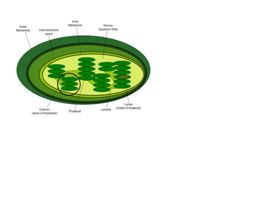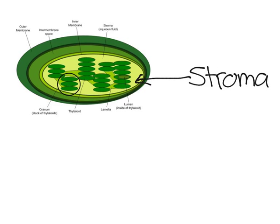What you see in this yellow part right here is the stroma. You could essentially think of it as the cytoplasm of the chloroplast.